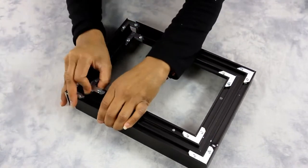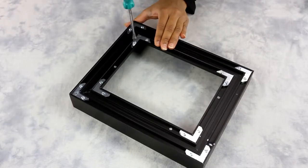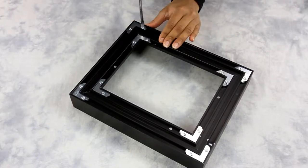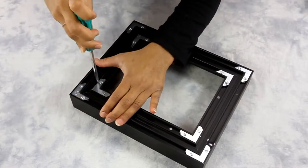Once all sides are in, you can tighten all four sides with a screwdriver. Make sure to tighten until no gaps are visible.